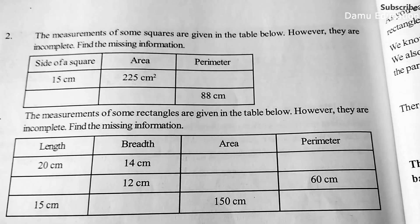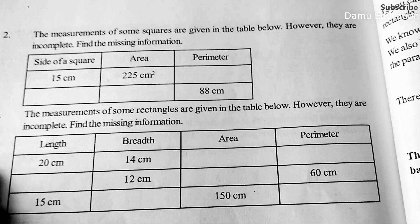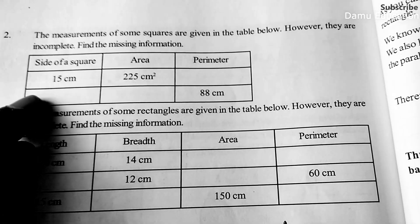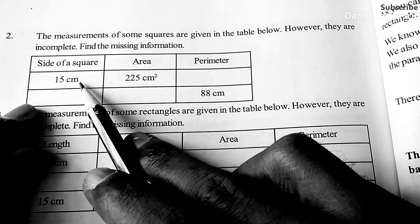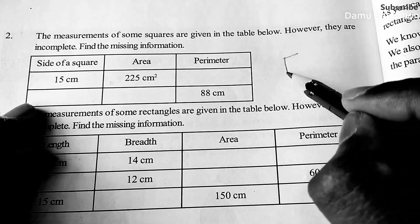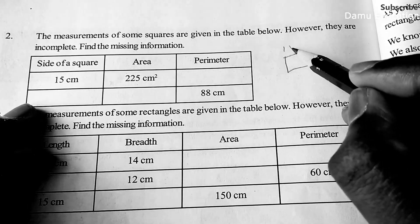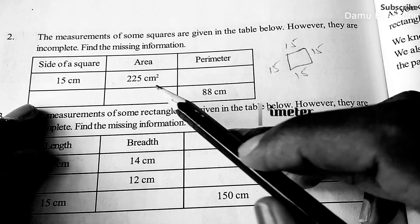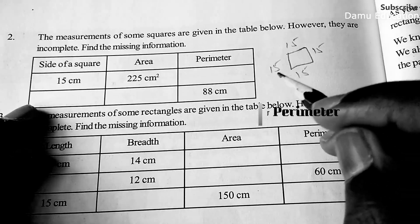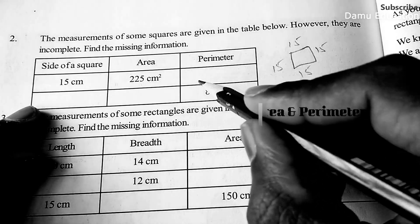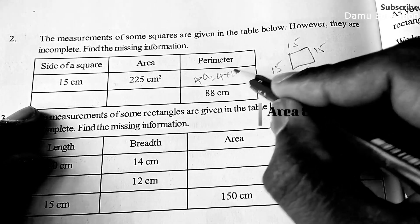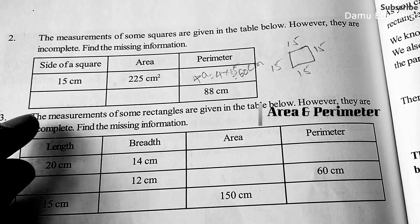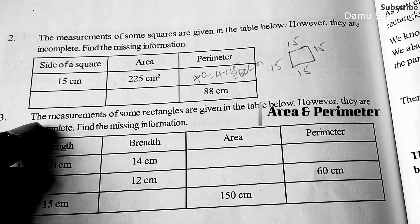The next question: the measurements of some squares are given in the table, however they are incomplete — find the missing information. For a square with side 15, all four sides are 15. The perimeter of a square is 4 into a, that is 4 into 15, which equals 60 centimeters.